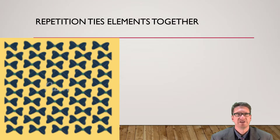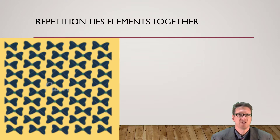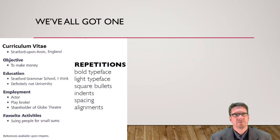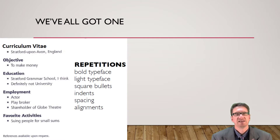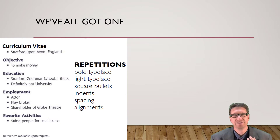Here's an example of repetition. The bow tie follows a nice pattern — across the page, down the page, staggered all the way down — ties it together and creates a unified whole. A curriculum vitae has structure: bold typeface, a larger heading at the top, smaller headings below, the same font, the same spacing, the same indentation, the same alignment. There's a lot that's repeated in something that wants to give a reader a clear view of the structure.